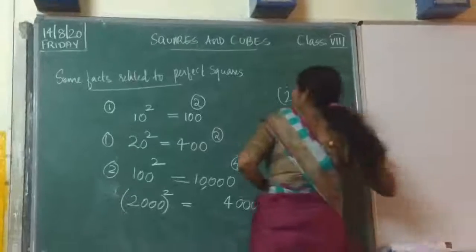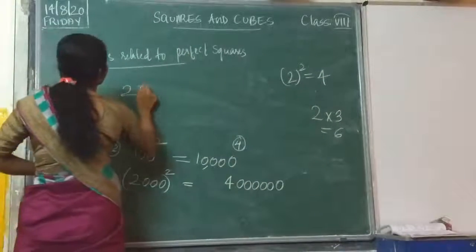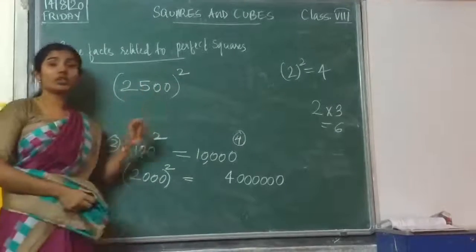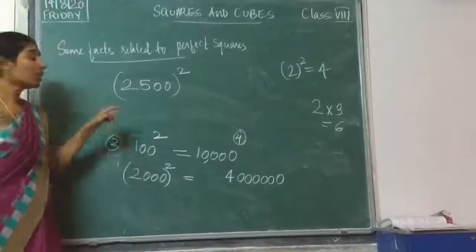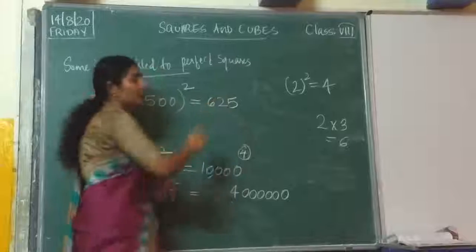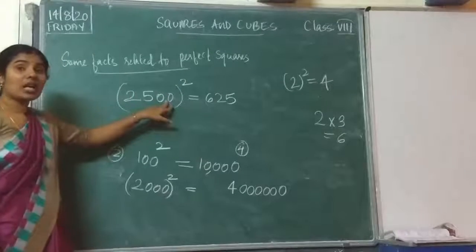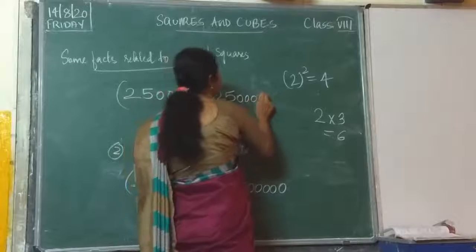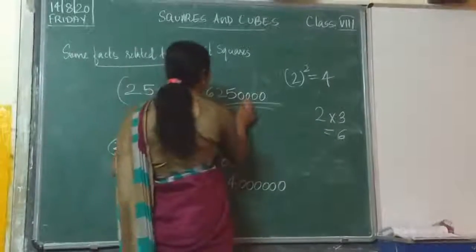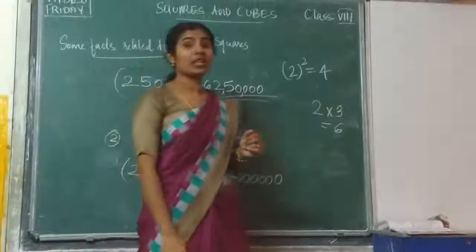I am writing some more directions. For example, take the square of 2,500. How will you do it? First, find the square of 25: that is 625. Then see how many zeros are in 2,500: there are 2 zeros. So its square will have 4 zeros. Therefore, 2,500 squared equals 62,50,000. Like this, you should do the sums. Do the remaining sums. Thank you.